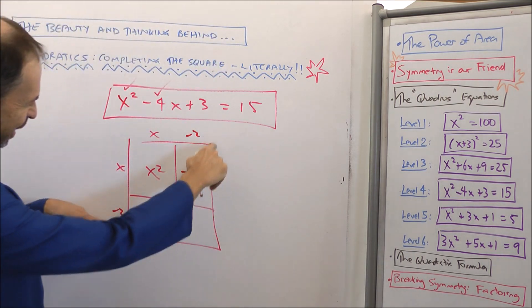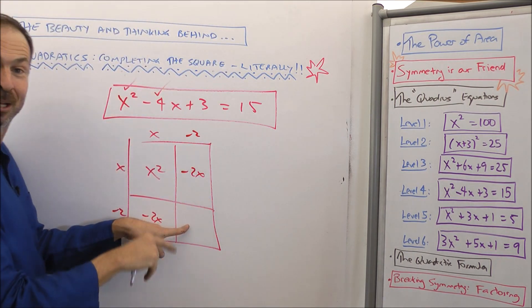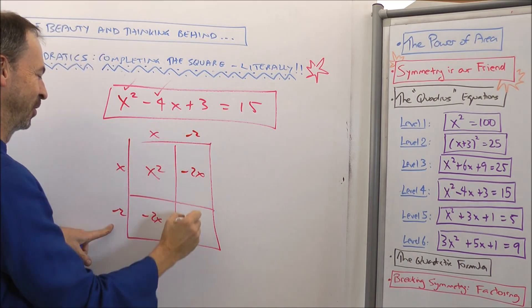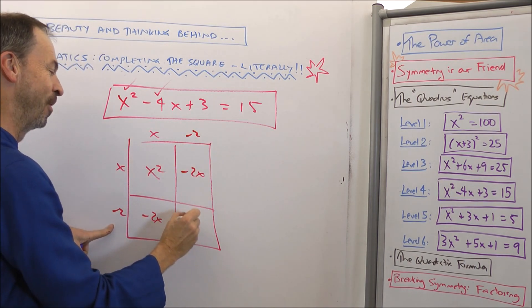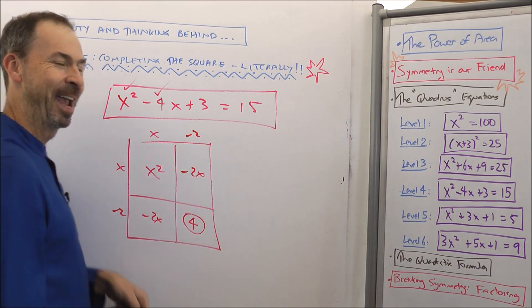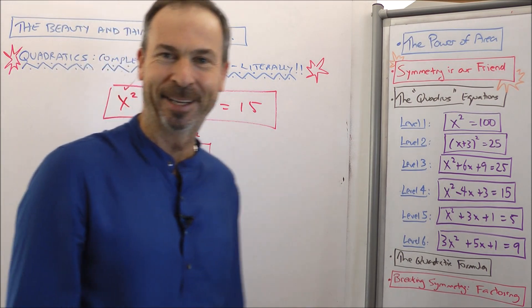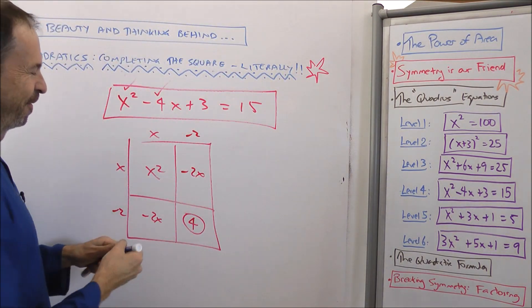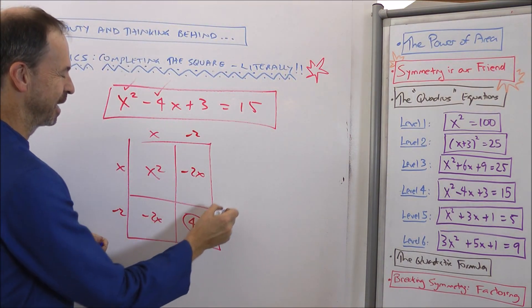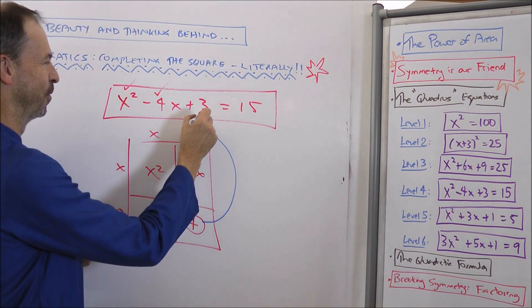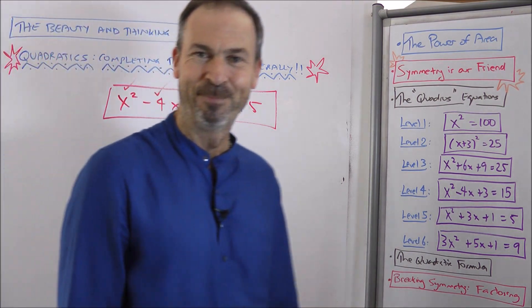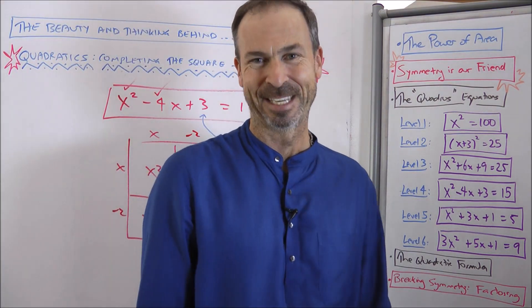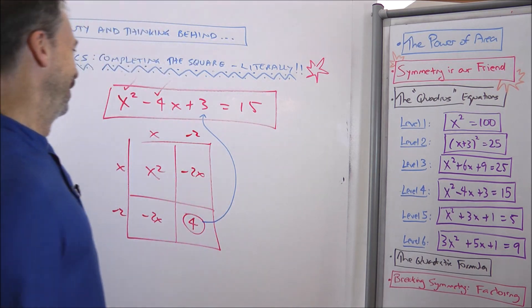Which means the final piece when I complete the picture of the square is what negative 2 times negative 2 is — 4. And then I've got to panic. Because look, the picture wants a 4, and I don't have 4. We have 3. There is a snag. That was the snag.